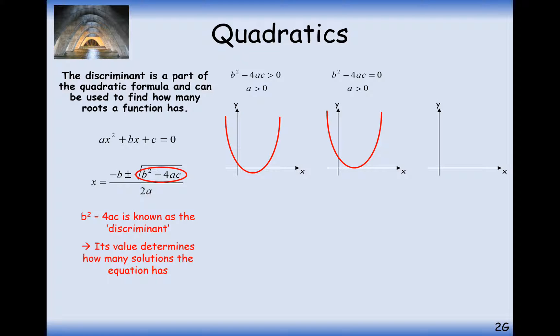When b squared minus 4ac is less than 0, then trouble starts to occur. What you're going to get is a negative part of this square root, and you can't square root negatives. So therefore, on the graph, this is going to have no solutions, because basically you can't square root negative numbers when you're in real numbers.